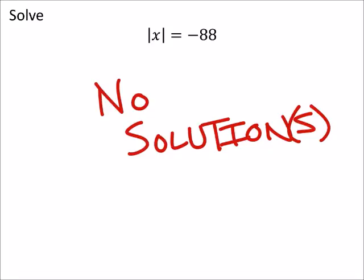I don't know. Because, this is pretty straightforward, right? We've got an absolute value of x equals negative 88.